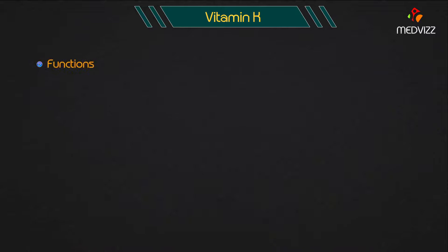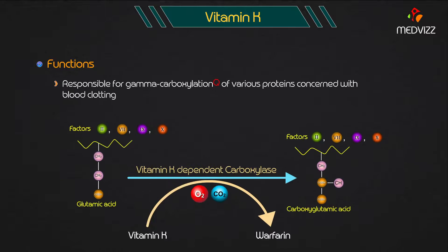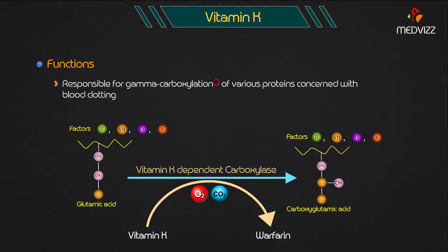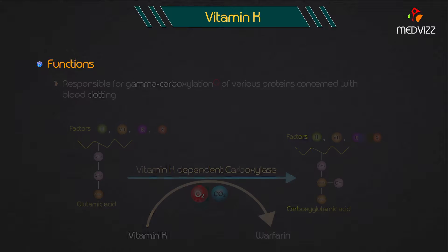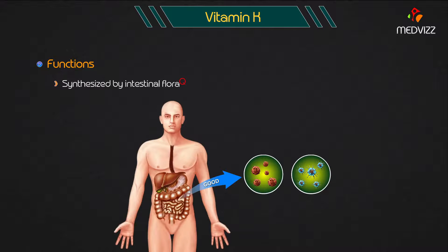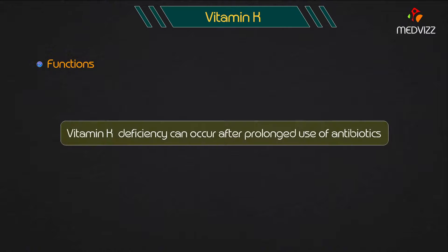Functions: Vitamin K is responsible for gamma carboxylation of various proteins concerned with blood clotting, and is synthesized by the intestinal flora. Therefore, vitamin K deficiency can occur after prolonged use of antibiotics.